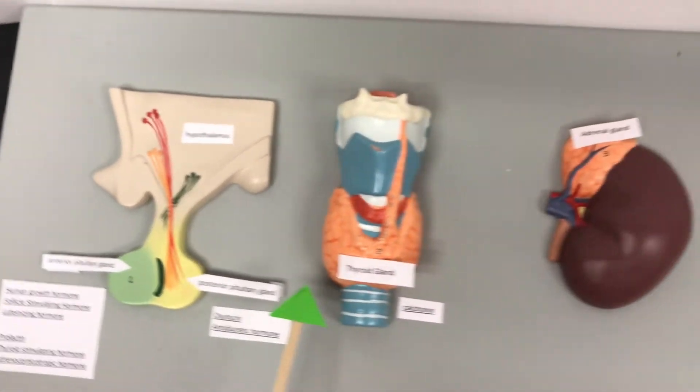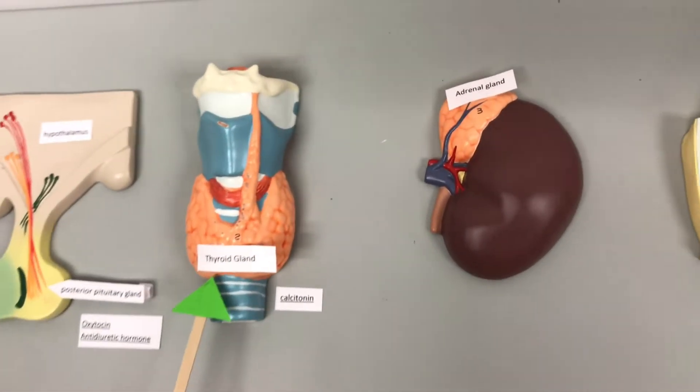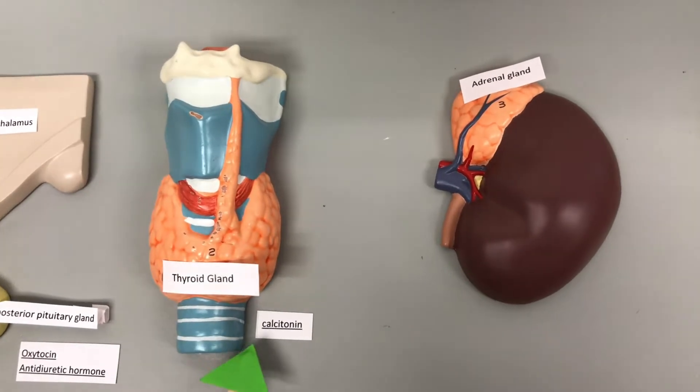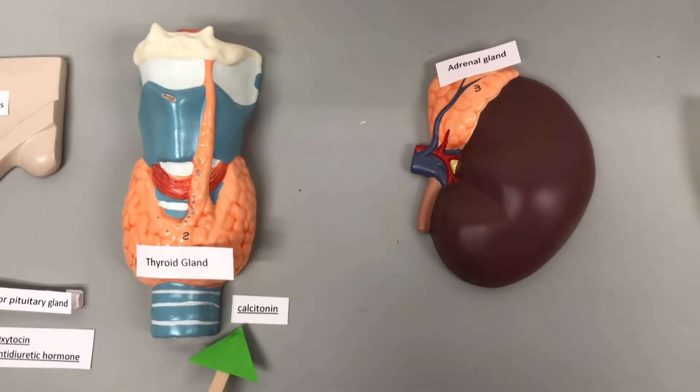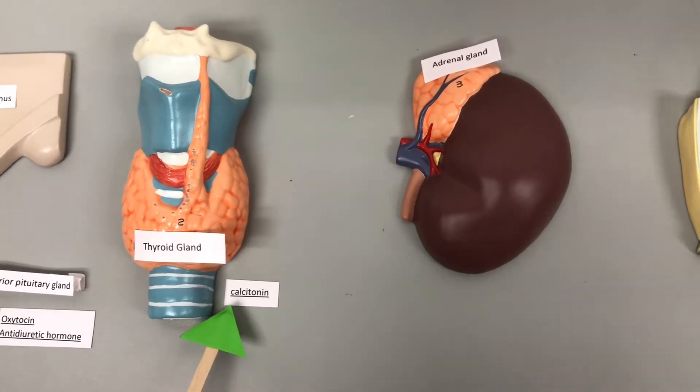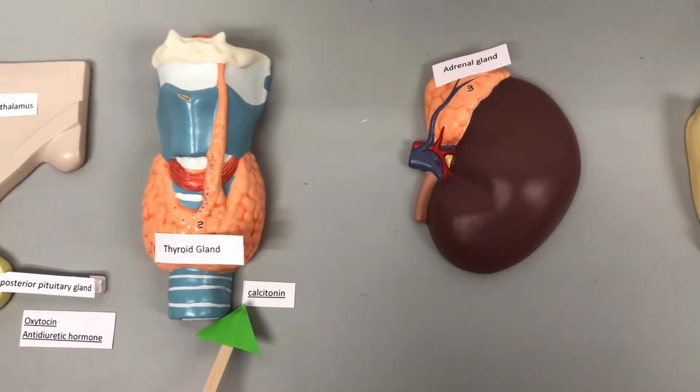The parafollicular cells in the thyroid gland secrete calcitonin, which decreases blood calcium levels.